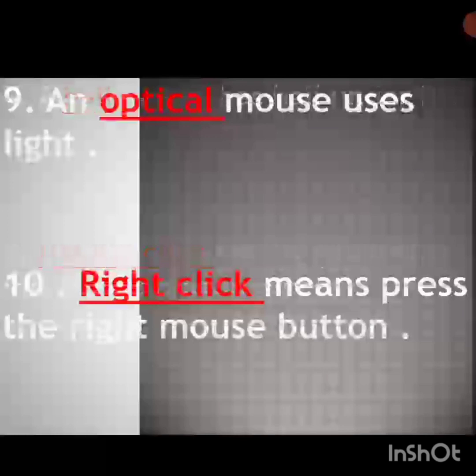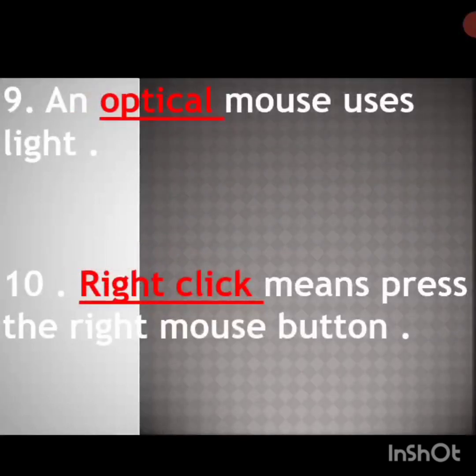O-P-T-I-C-A-L, optical. And optical mouse uses light. And the last one: right click means press the right mouse button. Right click means press the right mouse button. So dear children, till this much, write in your computer revision part.